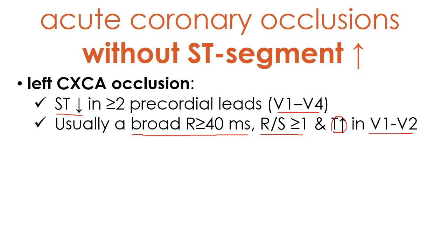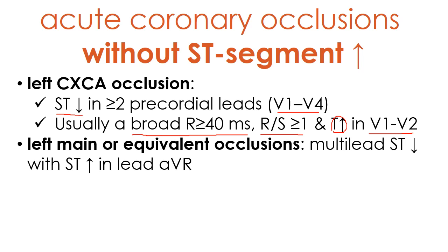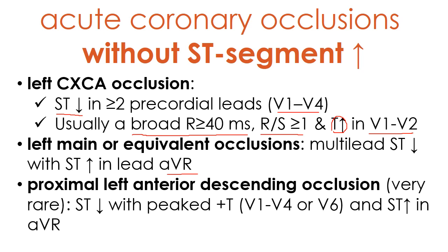The second condition is a left main coronary artery occlusion manifested by multi-lead ST-segment depression with ST elevation in lead AVR. Finally, very rarely, a proximal left anterior descending coronary artery occlusion may result in ST-segment depression with peaked positive T-waves from V1 to V4, sometimes extending up to V6, and ST-segment elevation in lead AVR.